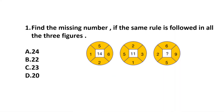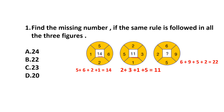Question number 1. Find the missing number if the same rule is followed in all the three figures. In the first figure, numbers given are 5, 6, 2, 1 and in the square there is number 14. The rule is: if we add all the numbers in the circle, 5 plus 6 plus 2 plus 1 equals 14. In the next figure, 2 plus 3 plus 1 plus 5 equals 11, which is the number in the square. Now in the third figure, 6 plus 9 plus 5 plus 2 equals 22. So our answer is option B, 22.